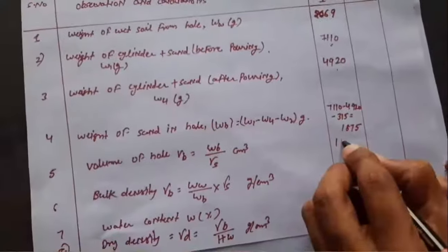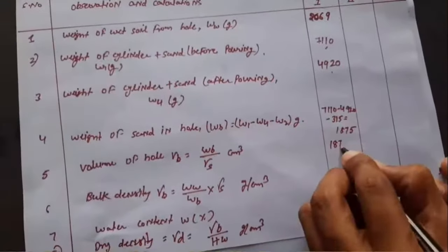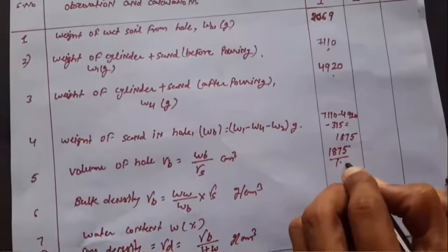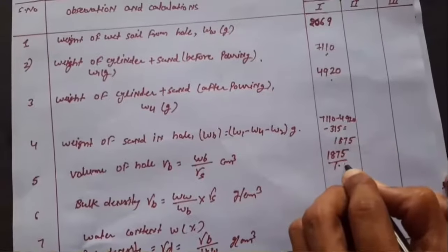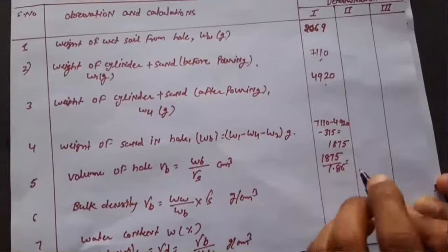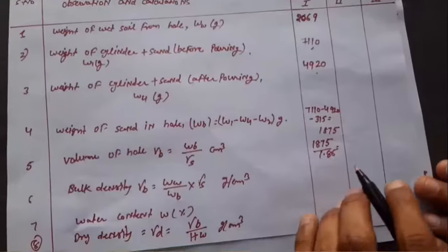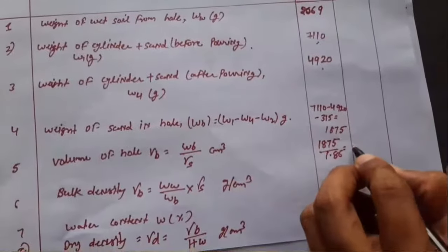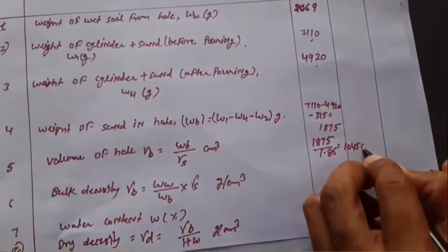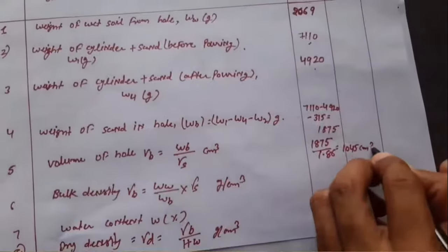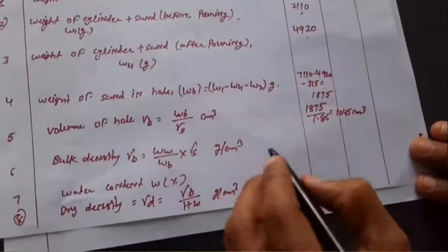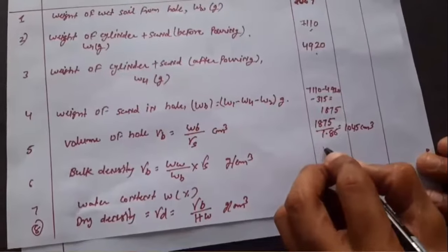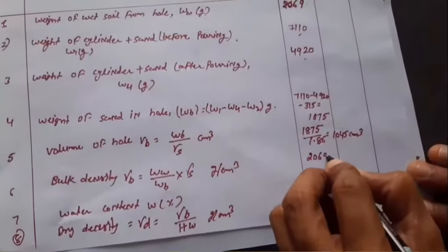Now calculate the volume of the hole, which is Wb divided by γs, where γs is the bulk density of sand calculated earlier. It comes out to be 1008 cm³ — note that 1045 written earlier was a mistake; the correct value is 1008 cm³.